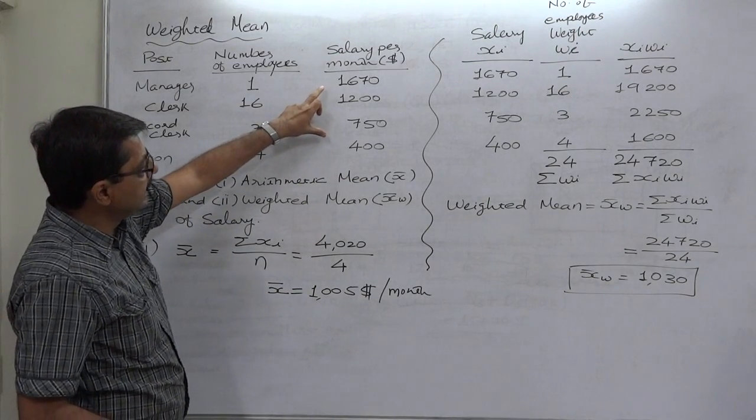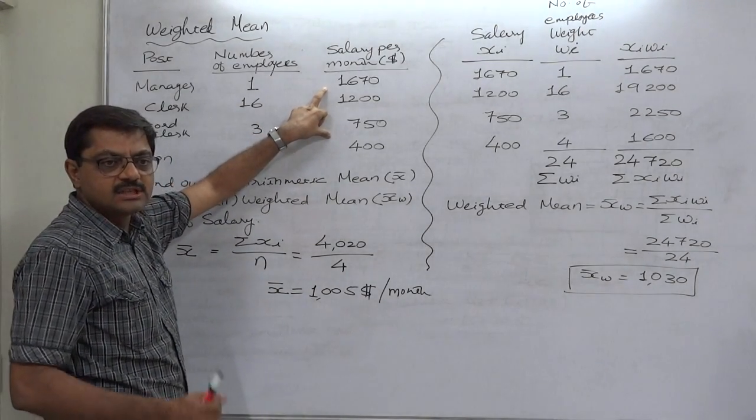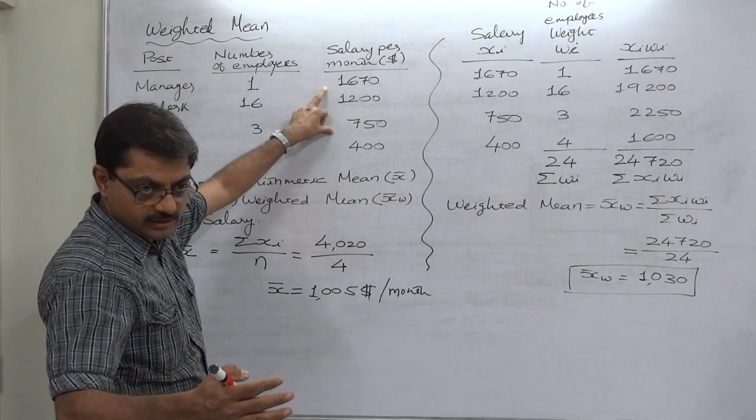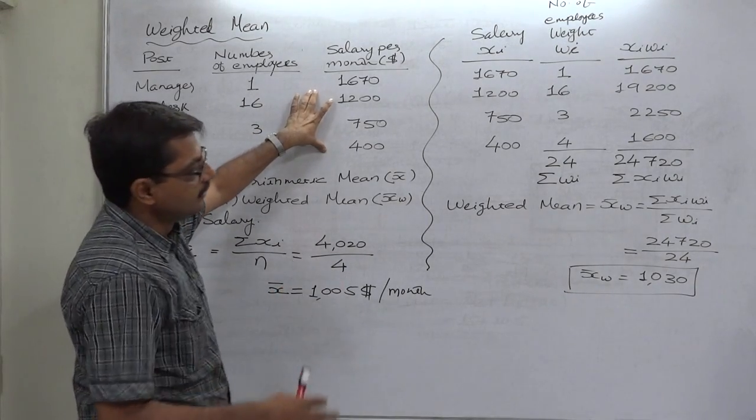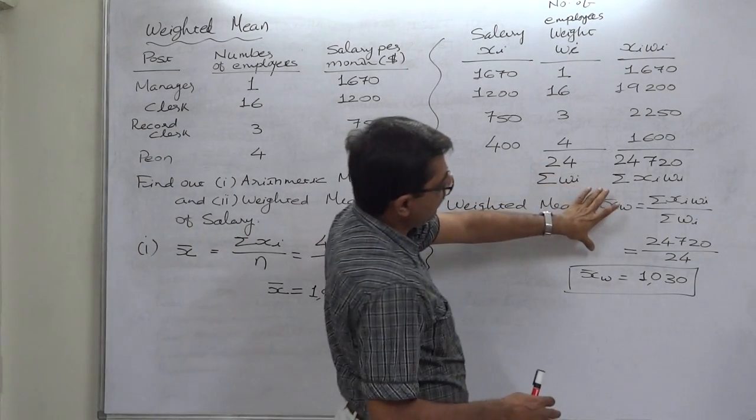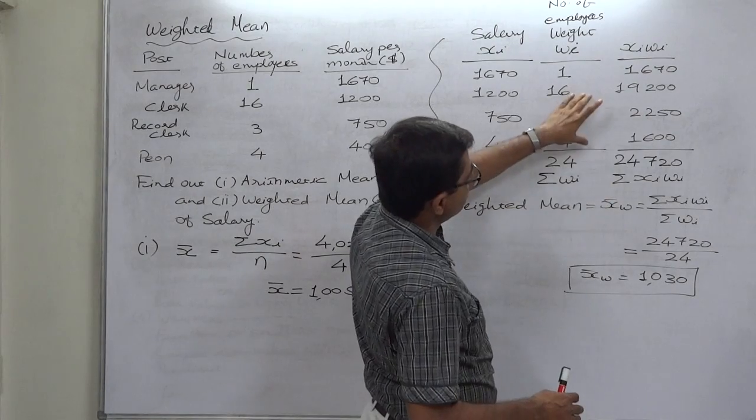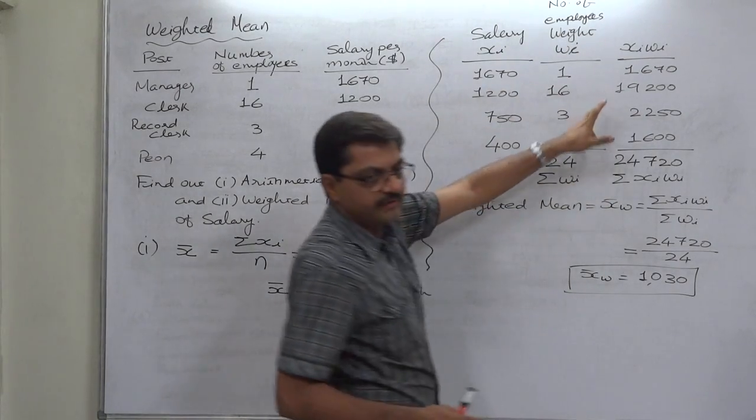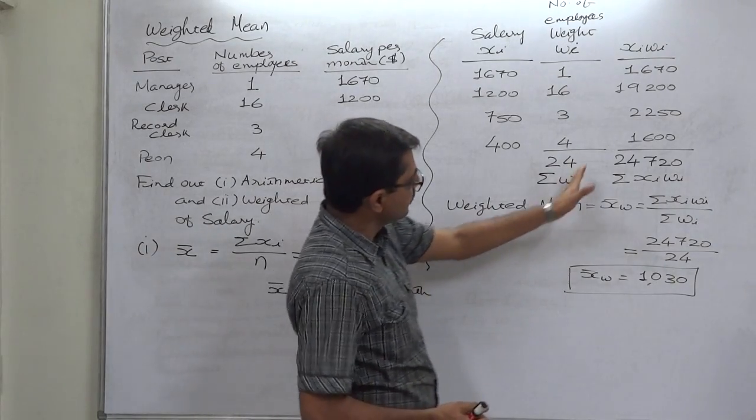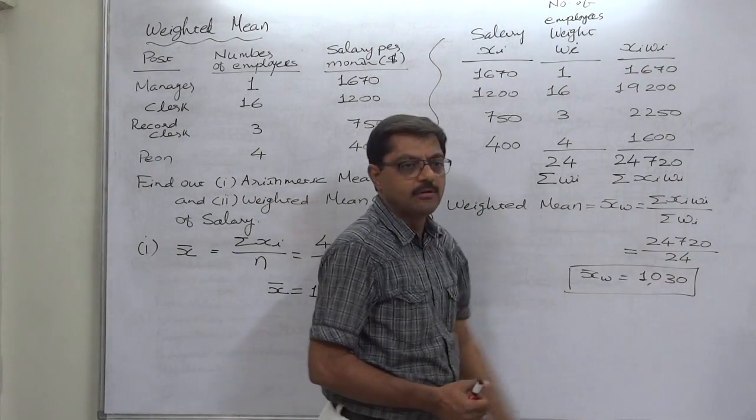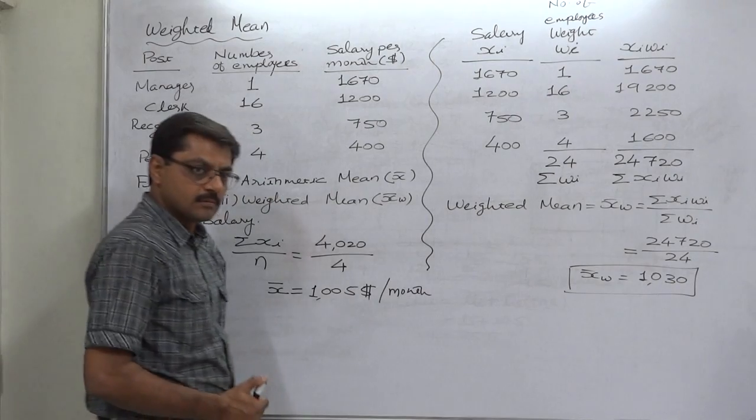The biggest difference is, in case of calculation of arithmetic mean, all the values of the variable are considered with equal importance. The importance is one in all cases. While for calculation of weighted mean, we consider the relative importance of each and every value, and it is also taken into consideration for the purpose of calculation. Okay, thank you.